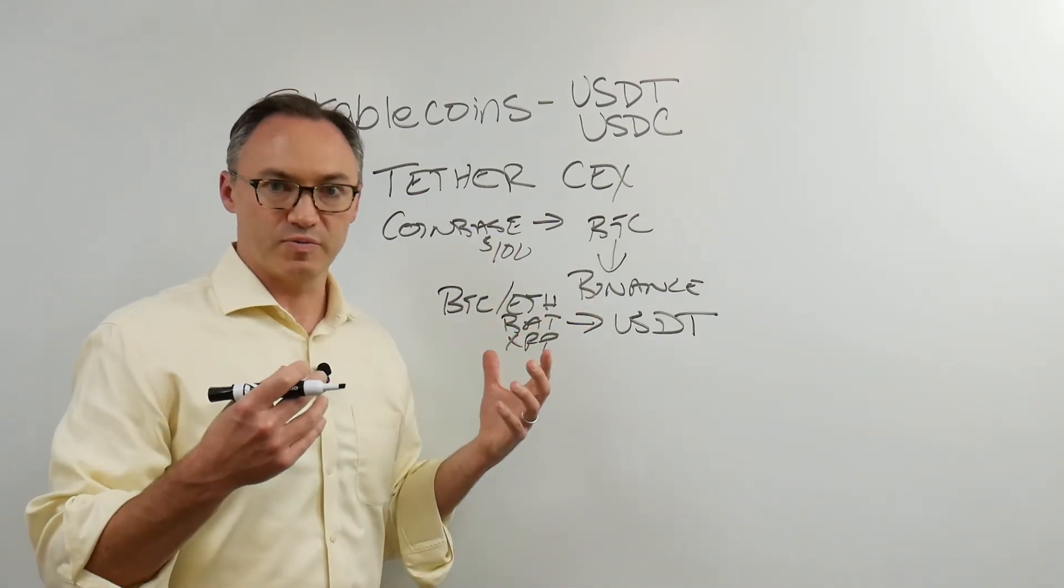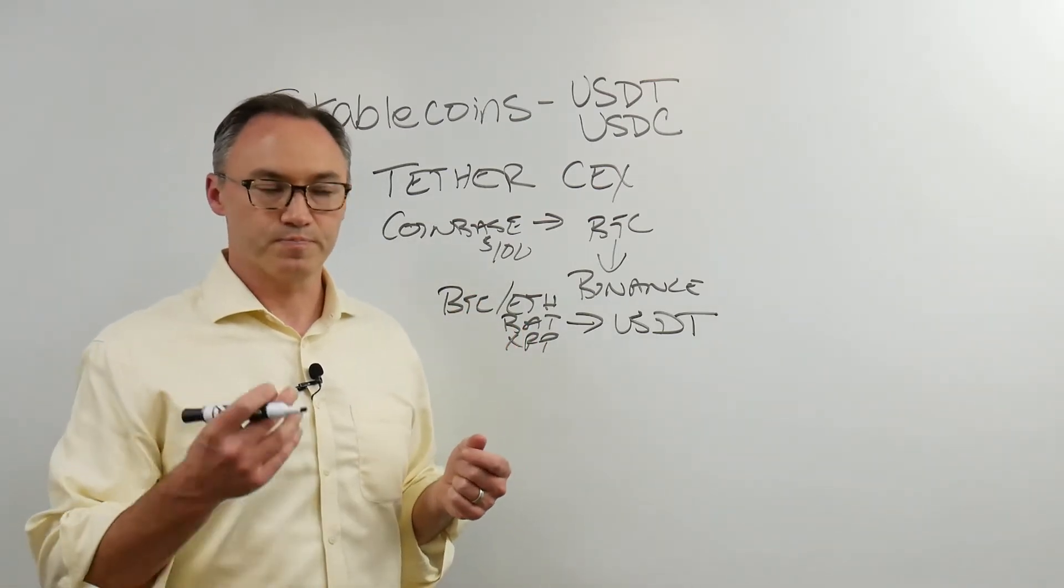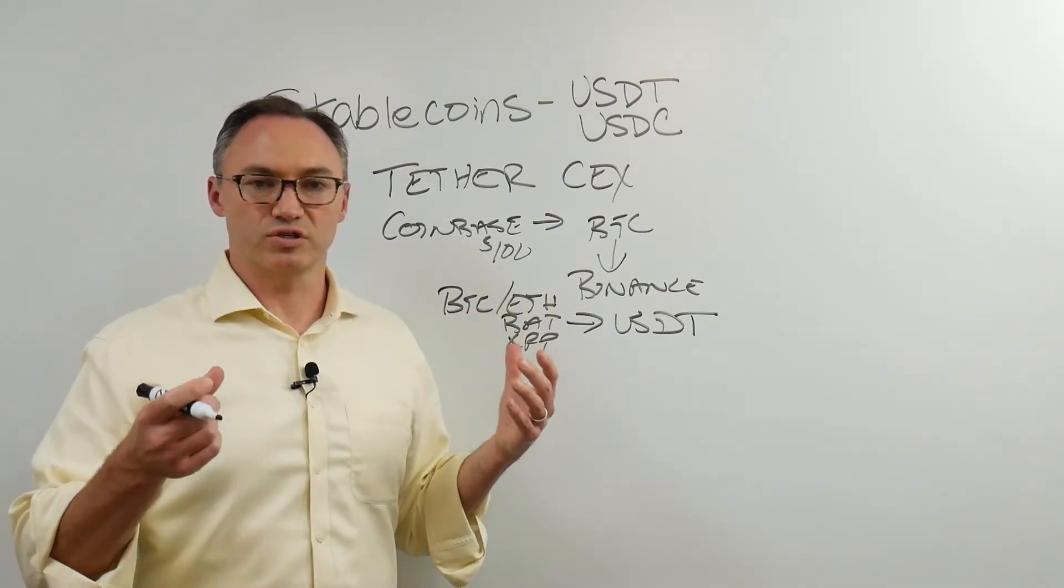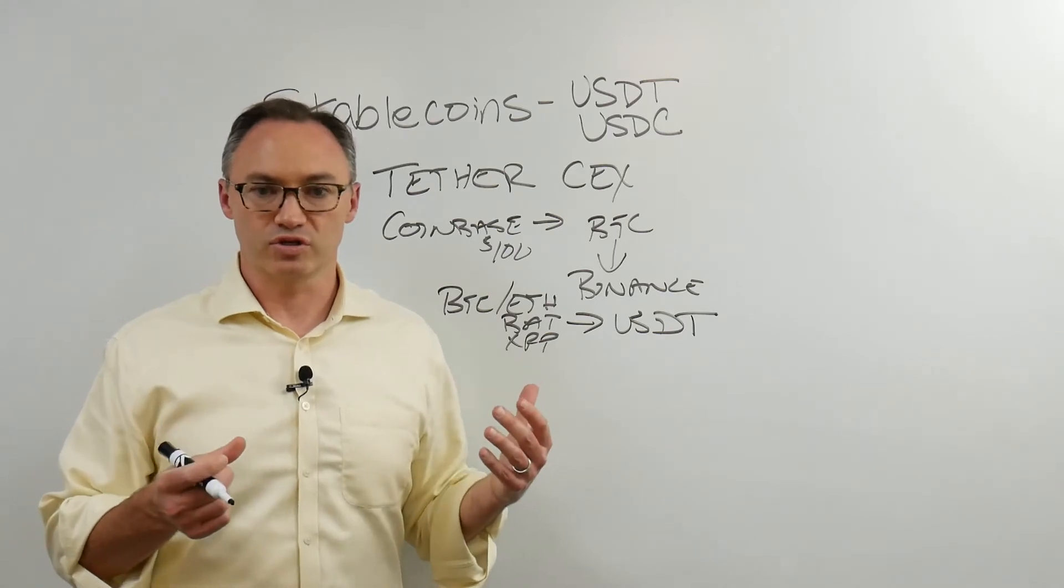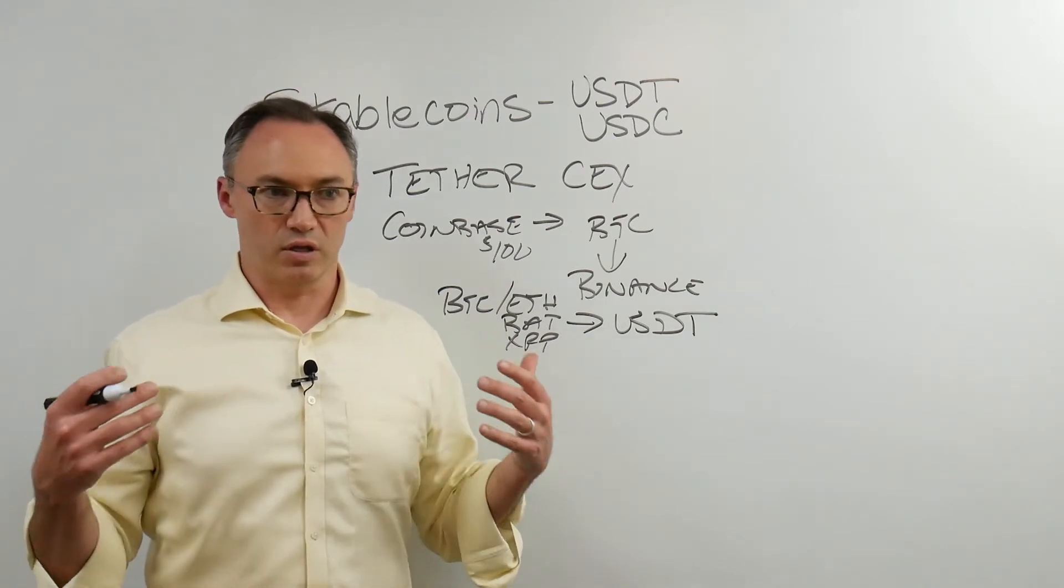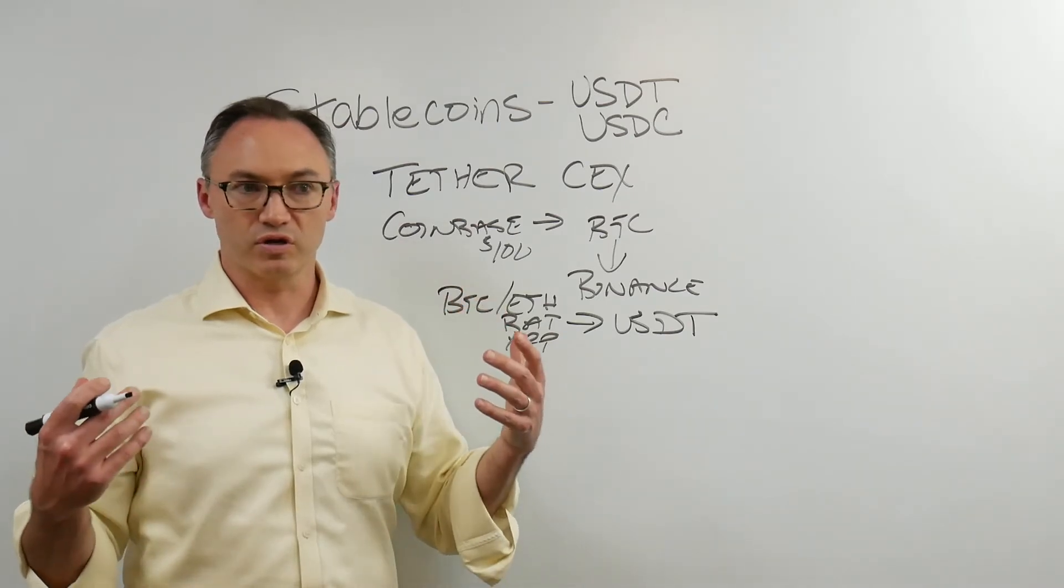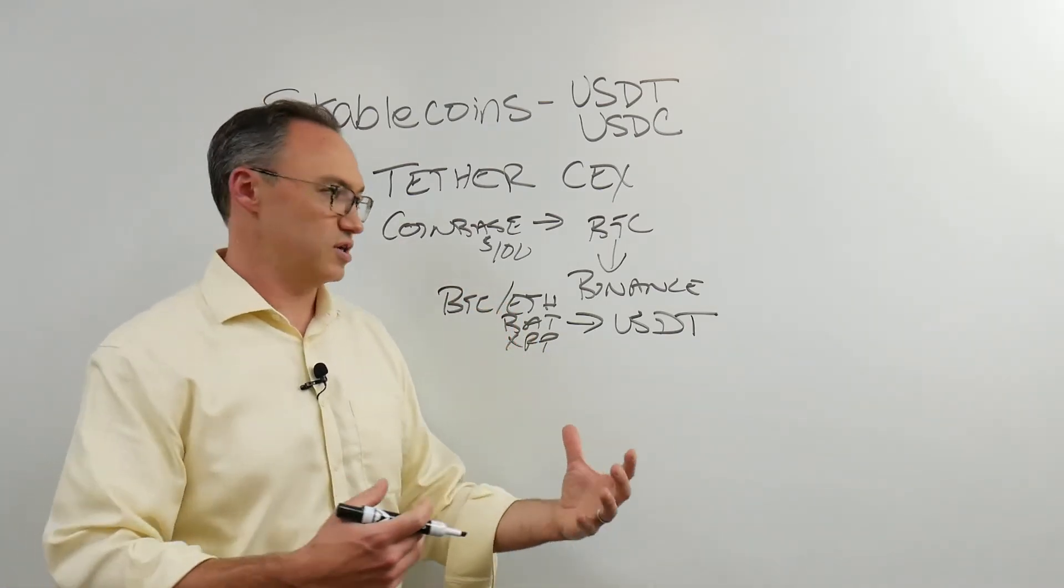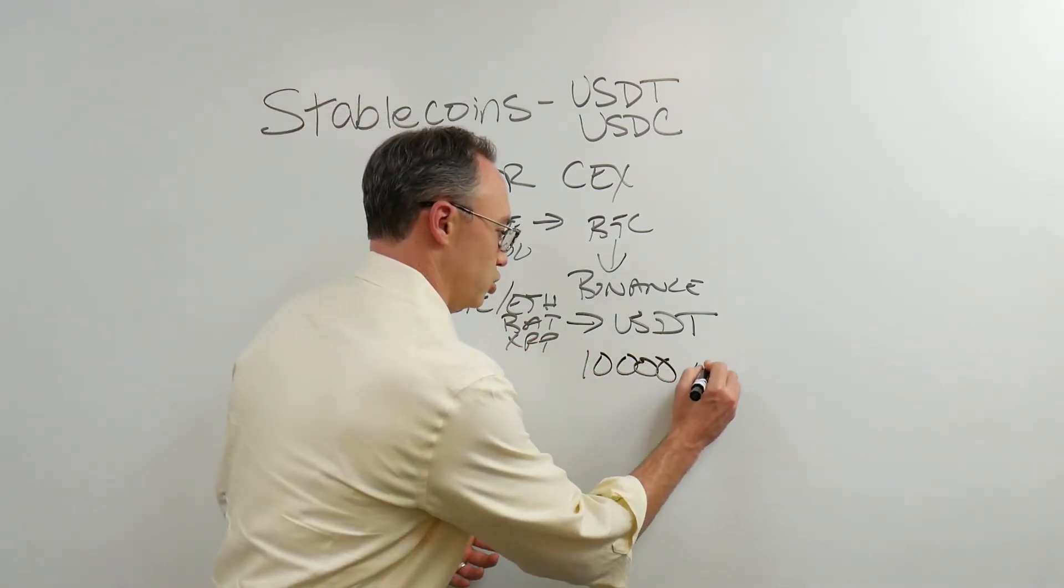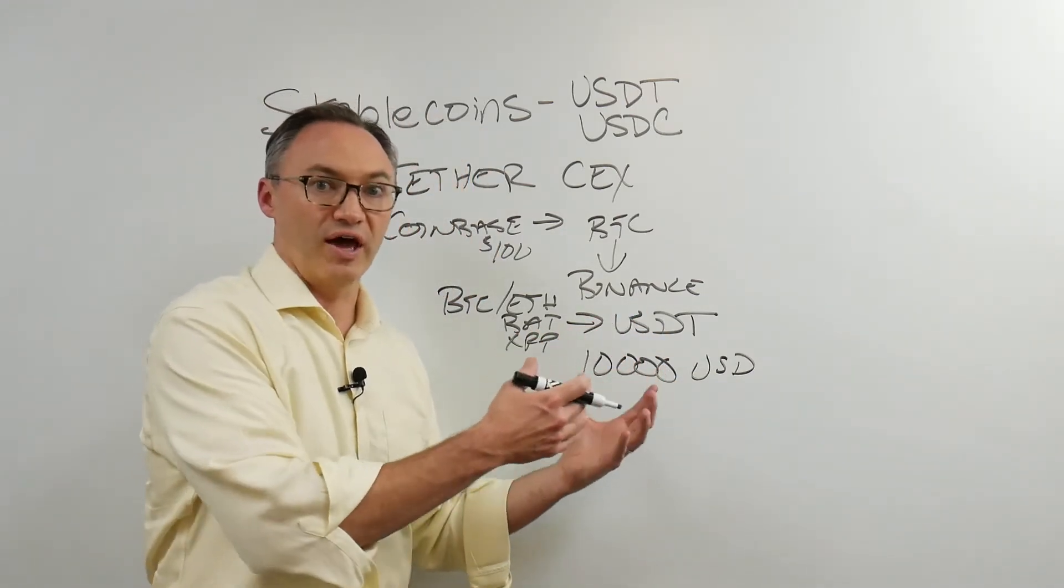But what's happened is the exchanges have been using Tether for so long that it just got to be it's worth a dollar because the exchanges say it's worth a dollar because they're using so many of these tokens to denote a dollar that we can trade against it, that if it were to somehow collapse, if it were to somehow be worth 80 cents all of a sudden, the entire cryptocurrency market would have a huge issue because now all of a sudden that, you know, let's say Bitcoin is trading at 10,000 US dollars per Bitcoin, but Tether is worth only 80 cents. What does that do on that exchange?